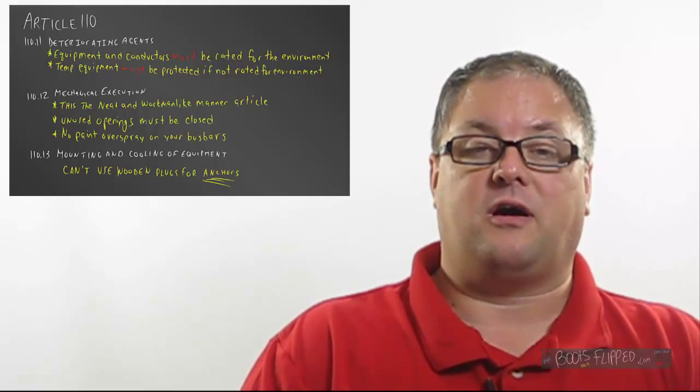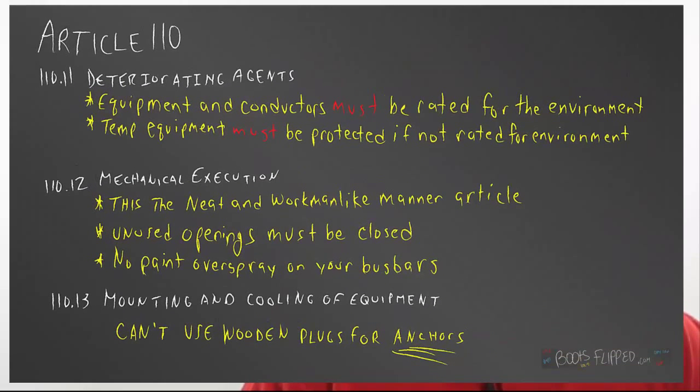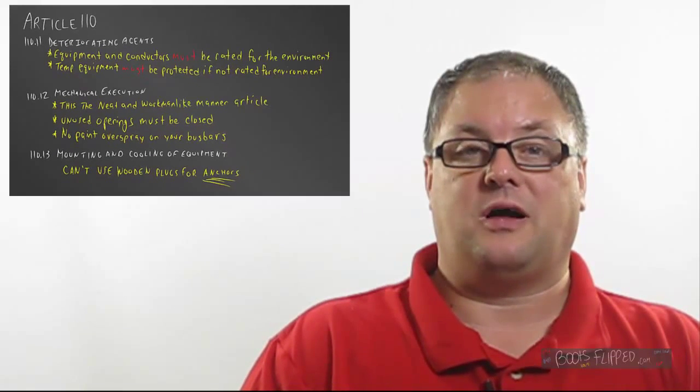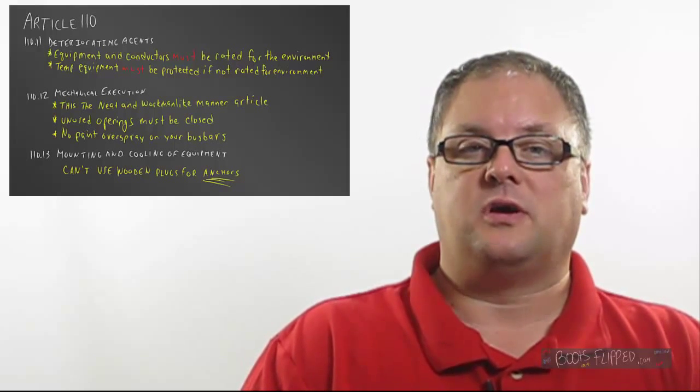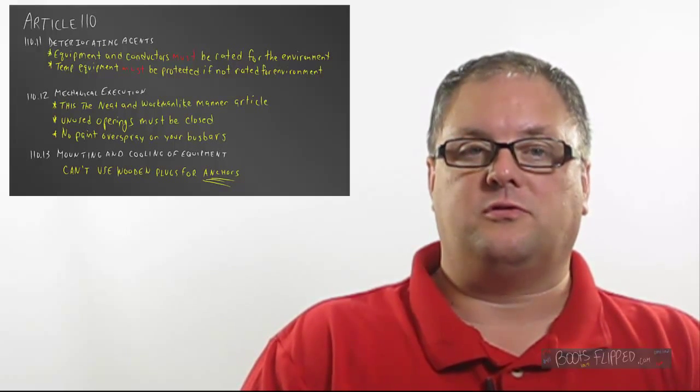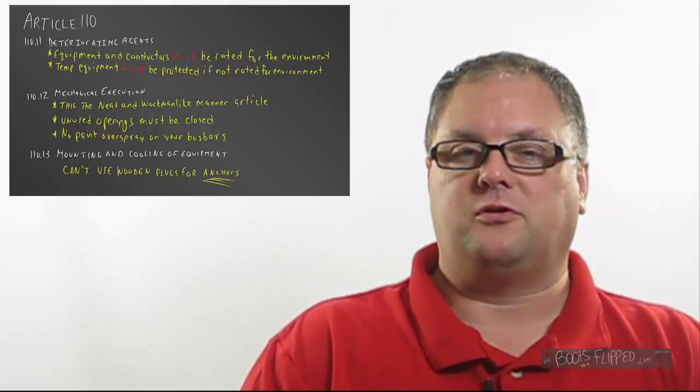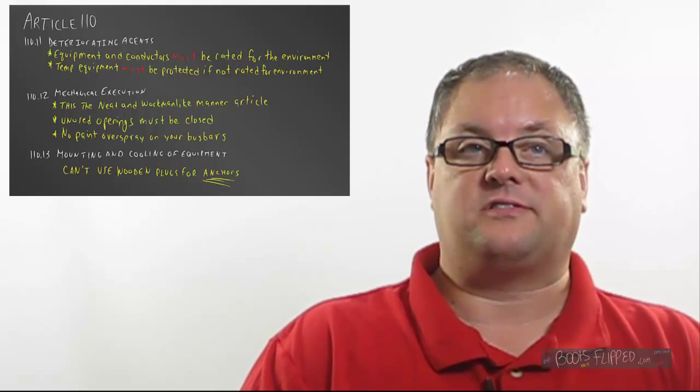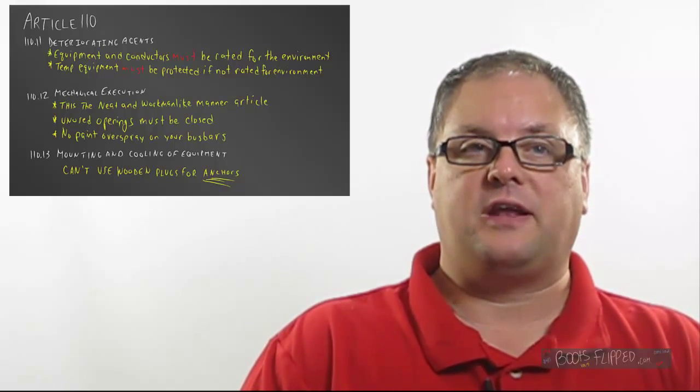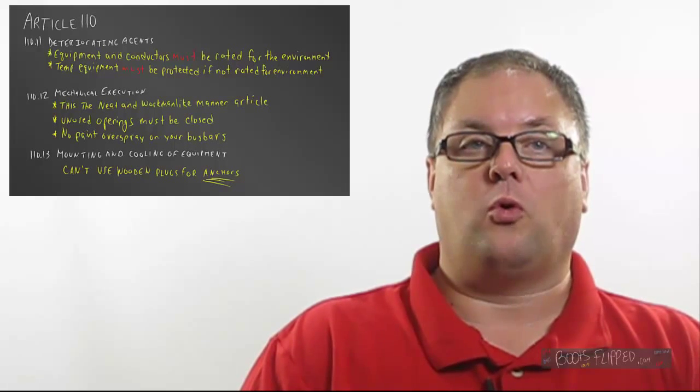Another big thing in that article for us is temporary power. If you get into apartment buildings, probably there's not going to be any roof or anything on them for a long time. So when you put out temporary panels, say along the hallways, you're probably not going to use outdoor rated panels. You're probably using indoor rated panels. So you have to protect them for the environment if that's the case. So that is Article 110.11.